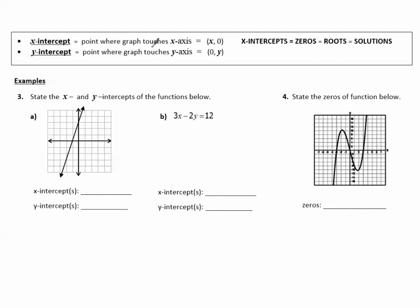The x-intercept is the point where the graph touches the x-axis, written as (x, 0). X-intercepts also mean zeros, roots, and solutions — it's very important that these are all synonyms. The y-intercept is the point where the graph touches the y-axis, written as (0, y-value). In example A on the graph, the x-intercept is where the graph touches the x-axis — that happens at negative 1, so I write (negative 1, 0). The y-intercept is where the graph touches the y-axis, which is at (0, 3).